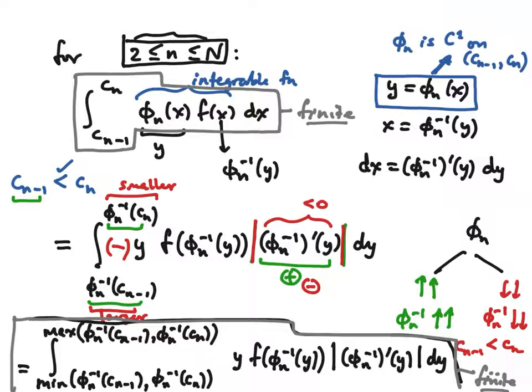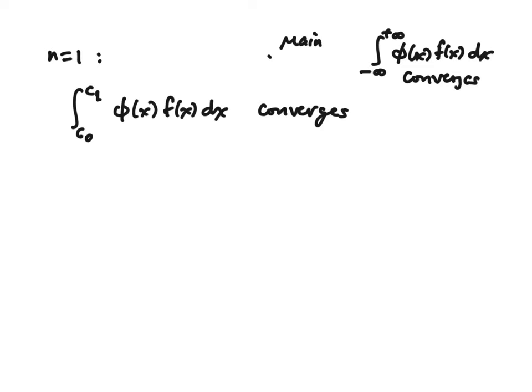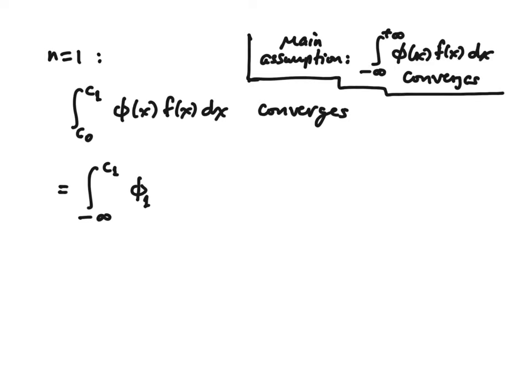We don't have to answer that question in general — just in our situation. Let's take a look at the case n equals one, where we have the integral from c_0 to c_1. We know this converges because that's part of the main assumption that the entire integral converges. Remember that c_0 is actually minus infinity, so it's singly improper, and the function is expressed as φ_1, which is the piece extending between negative infinity and c_1.